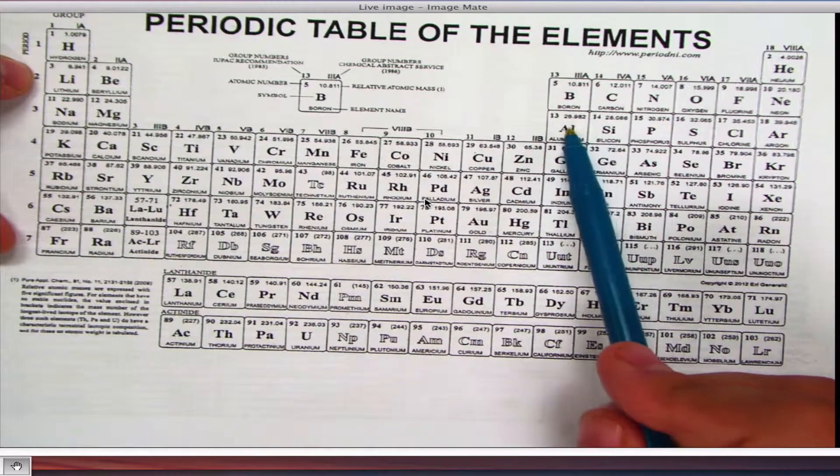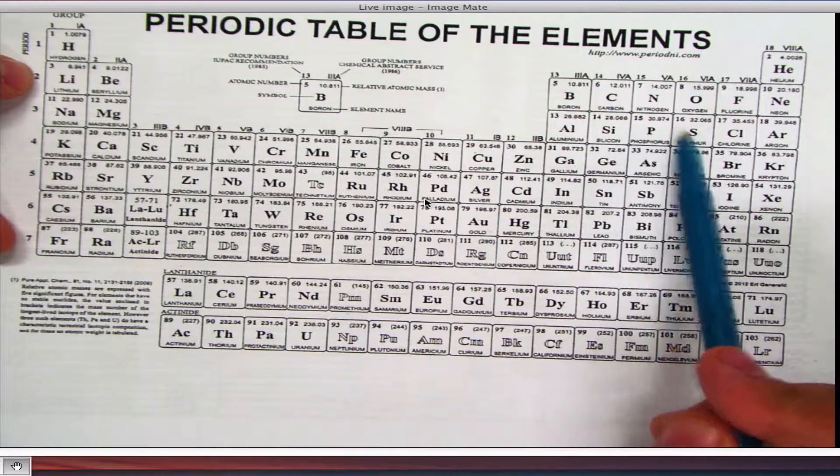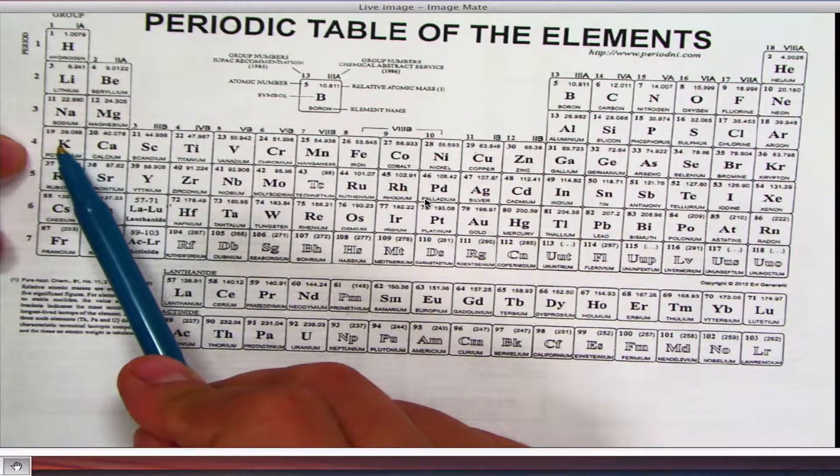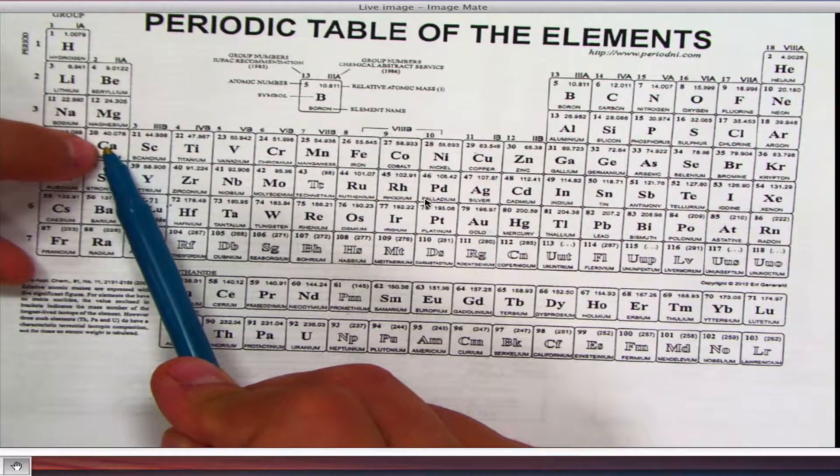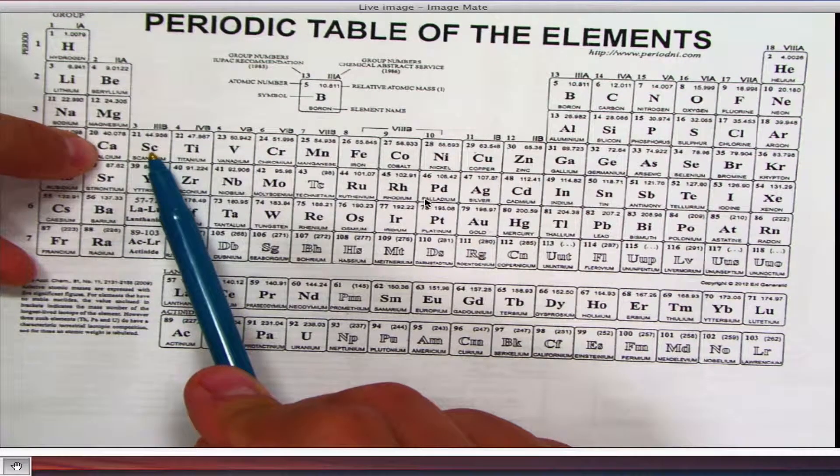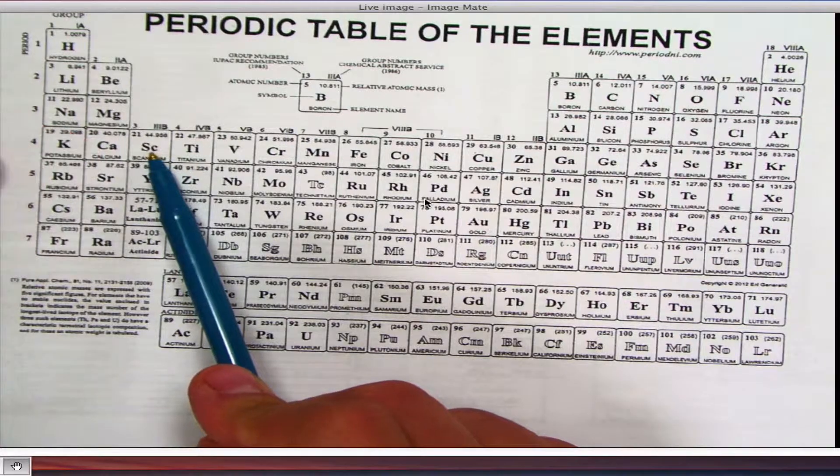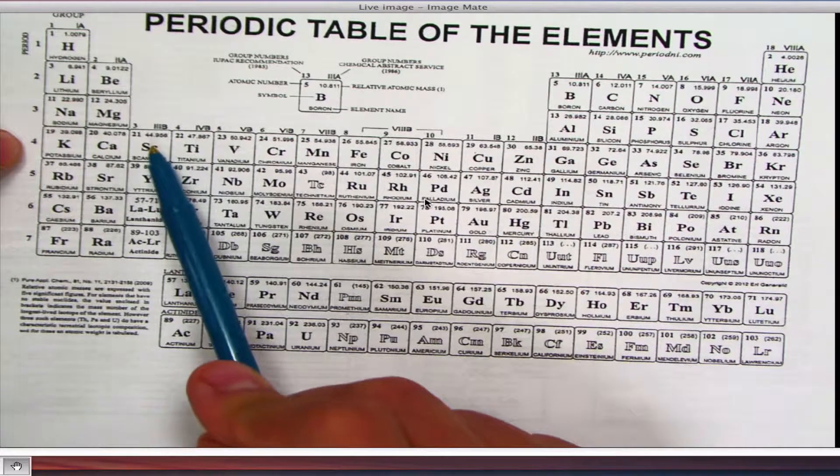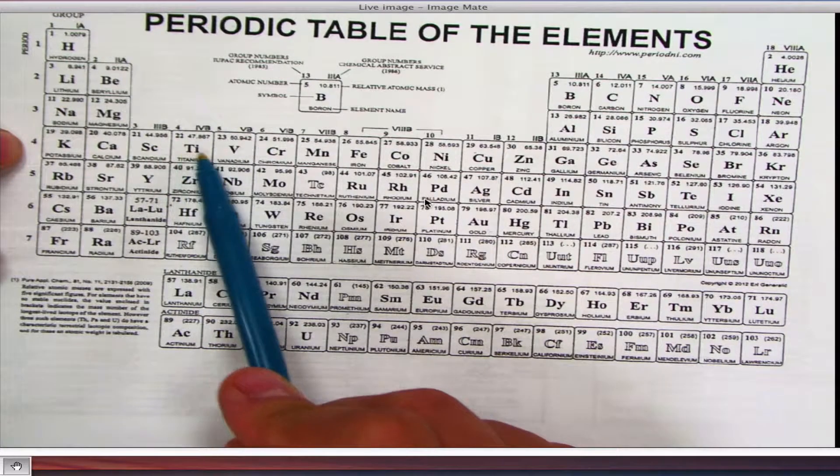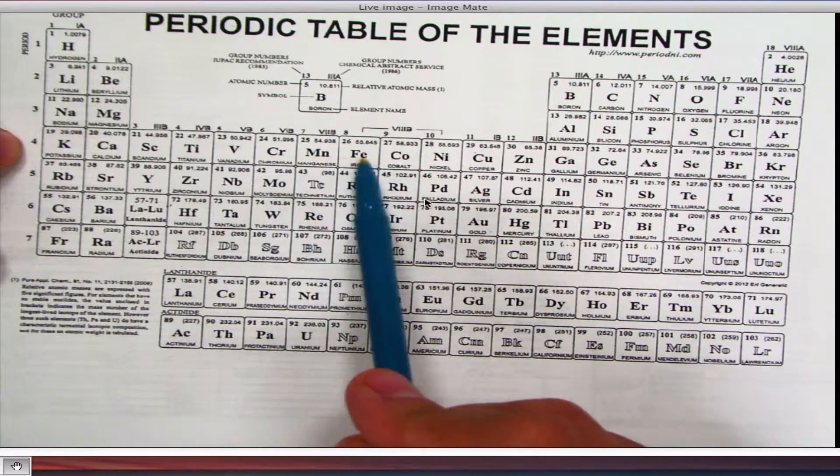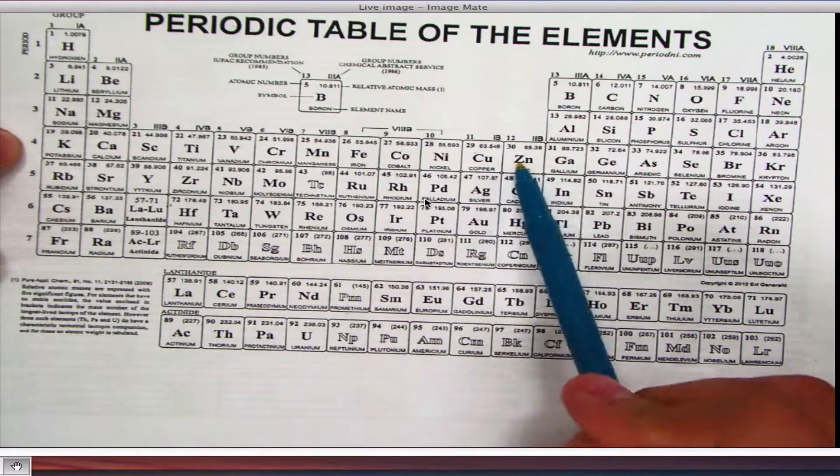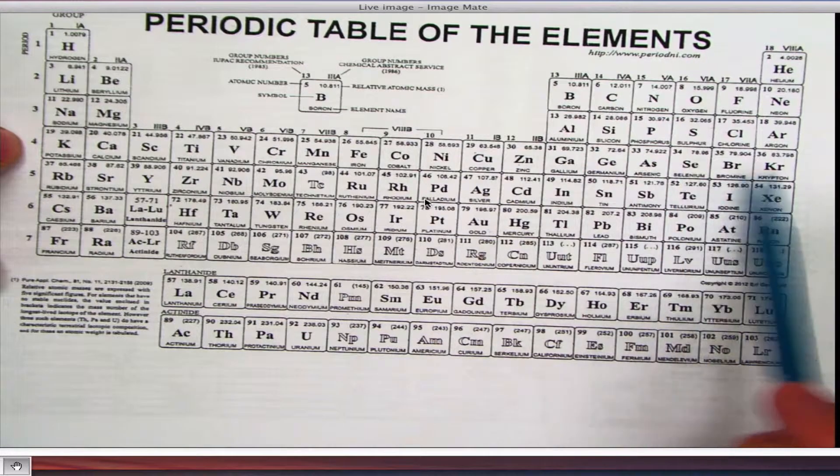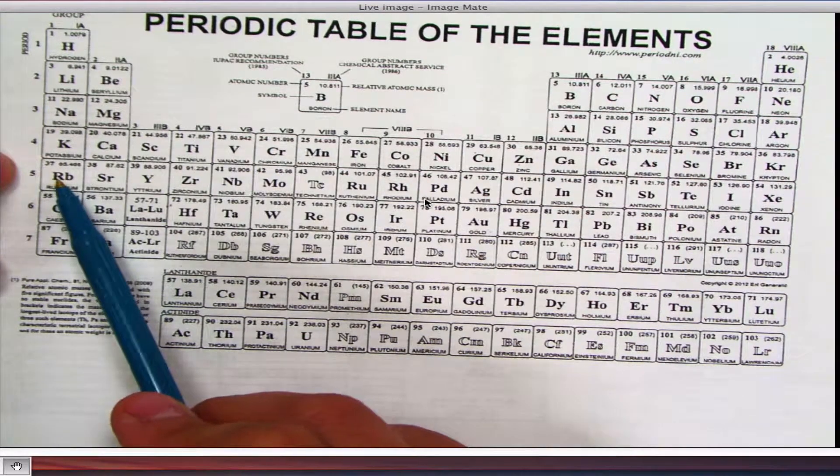3S1, 3S2, 3P1, 2, 3, 4, 5, 6, 4S1, 4S2. And then, when we get to the D block, what happens is, whatever row you're in, you go back one, because they're inner-level electrons. So this is 3D1, 3D2, 3D3, 3D4, 5, 6, 7, 8, 9, 10. And now, because we go back to the P block, now we go back to the regular row number, 4P1, 2, 3, 4, 5, 6, 5S1, 5S2.